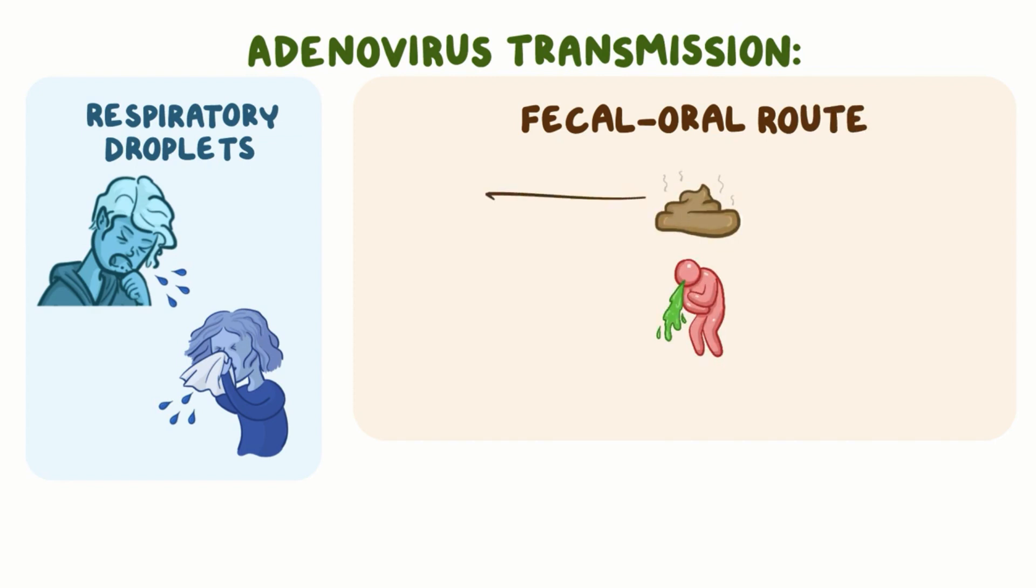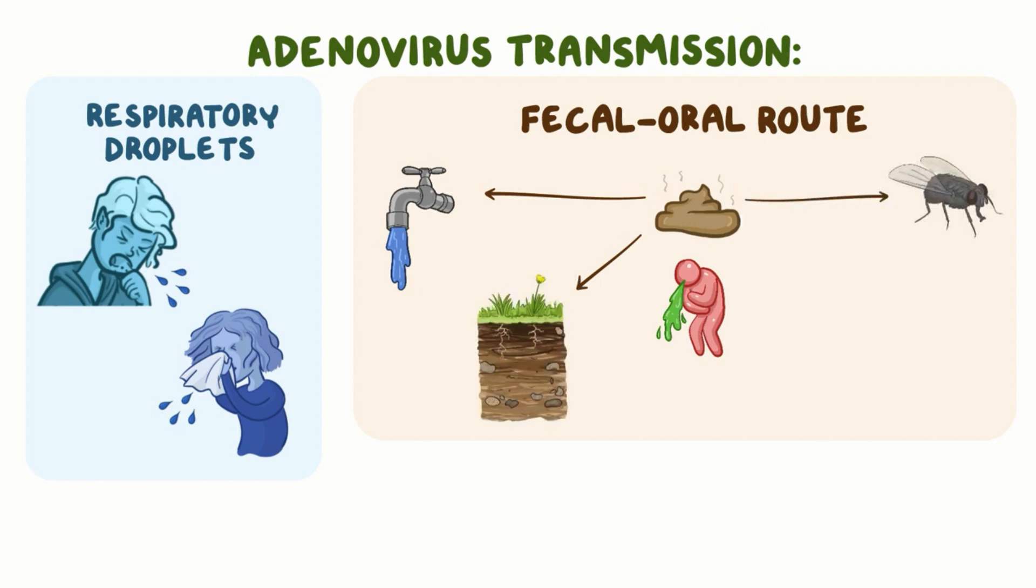This can happen if infected stool ends up in the water supply or on agricultural fields, if flies land on it and transfer stool particles to other places, or by touching contaminated surfaces. You can summarize it as the four Fs: fluids, fields, flies, and fingers.